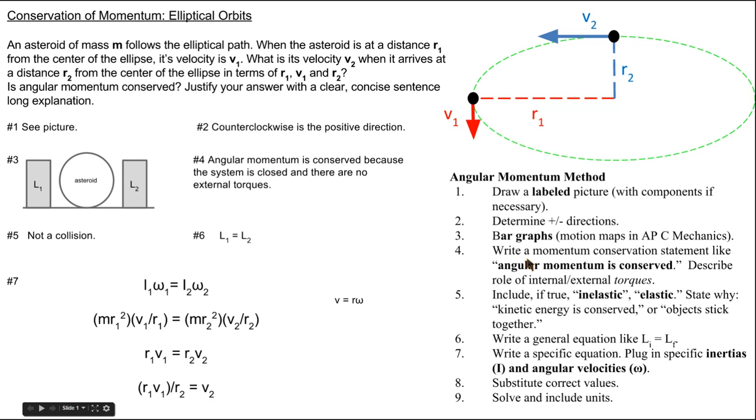Step 4 is writing a momentum conservation statement. We'll say angular momentum is conserved because the system is closed and there are no external torques. This is not a collision, so we're not going to talk about whether it's inelastic or elastic.